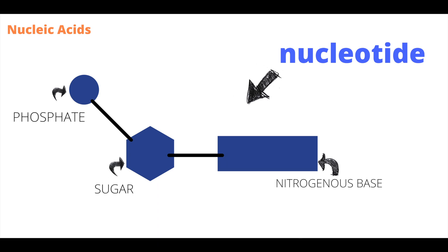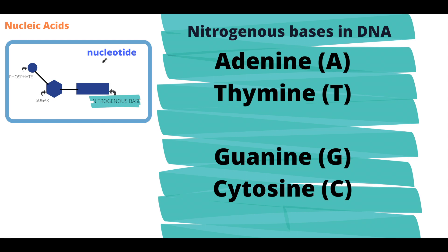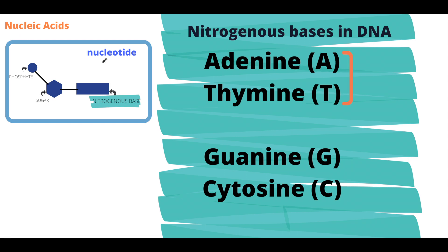The nitrogenous bases in DNA are adenine, thymine, guanine, and cytosine. Adenine and thymine always pair together, and guanine and cytosine always pair together.